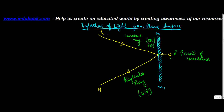Now, if you draw a line which is at a right angle — that is, 90 degrees — to the plane mirror and crosses the mirror at point O, which is the point of incidence, this line is known as the normal. Let us call this as OP. So OP is forming a right angle with MM' and this is known as the normal.